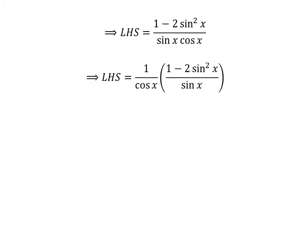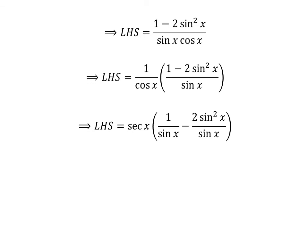We can rewrite the above expression as the left hand side of the identity equal to 1 upon cosine of x times the quantity 1 minus 2 times square of sine of x, upon sine of x. As we know, 1 upon cosine of x is equal to secant of x. And 1 minus 2 times square of sine of x upon sine of x can be written as the difference of two fractions: 1 upon sine of x and 2 times square of sine of x upon sine of x.